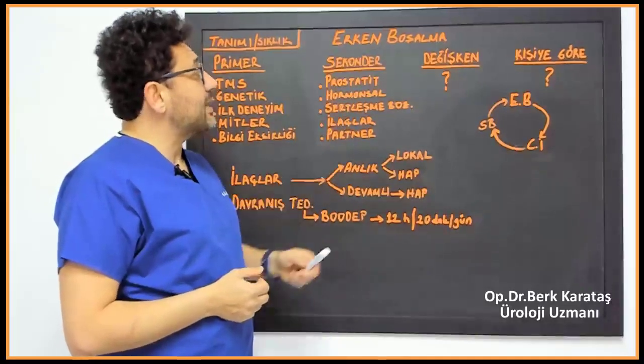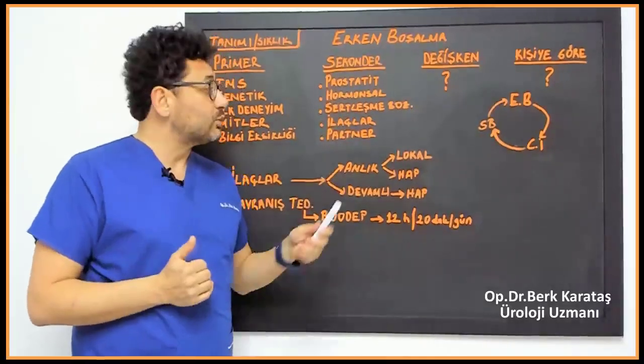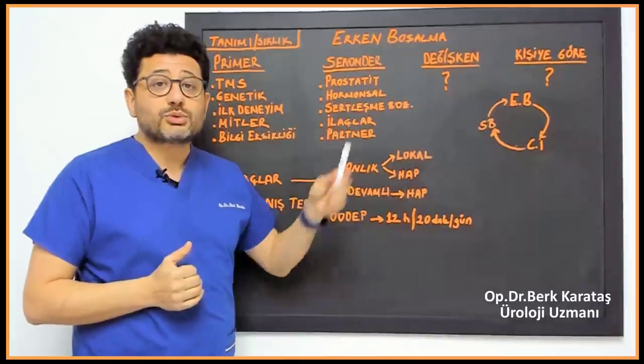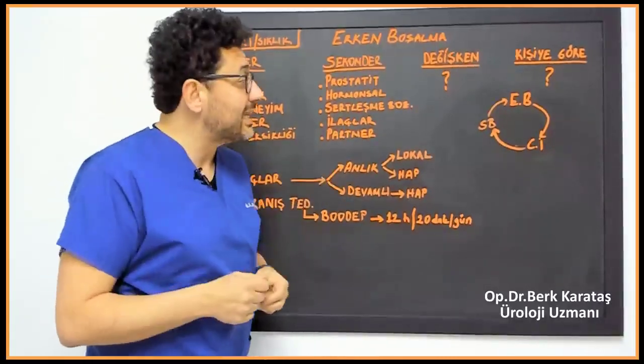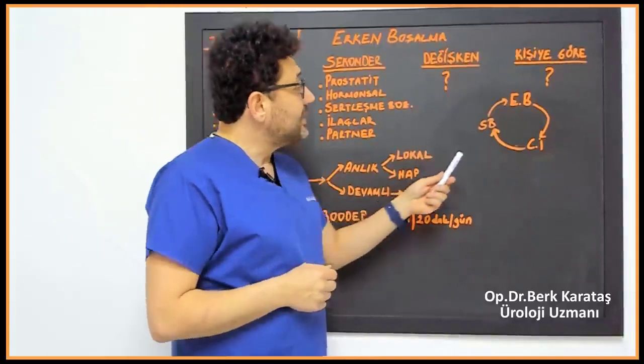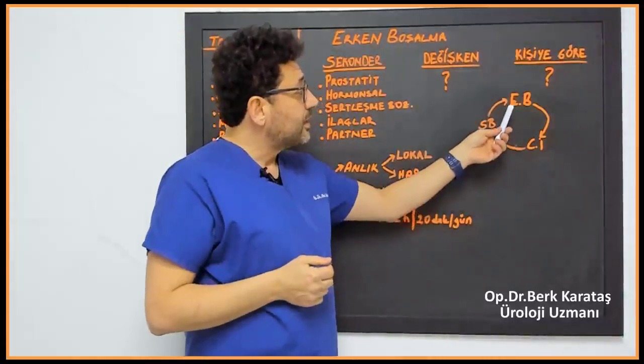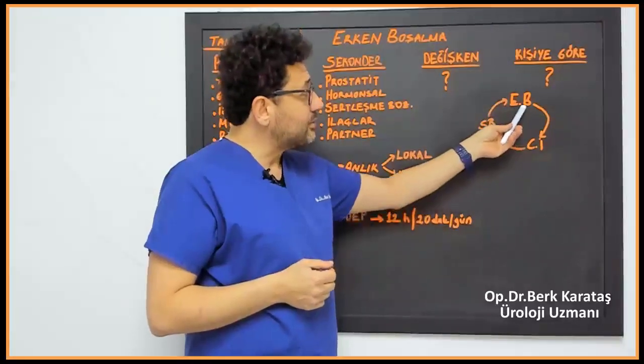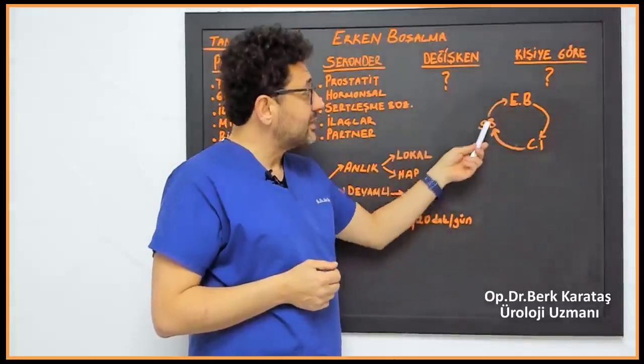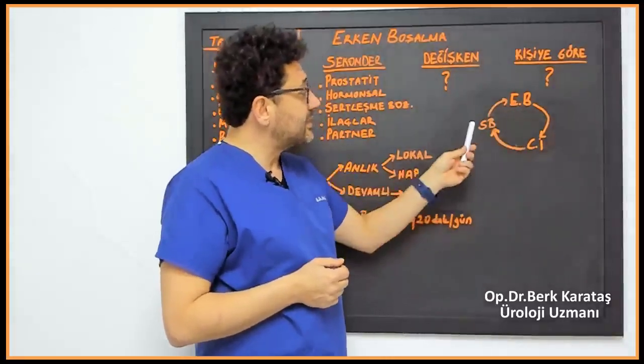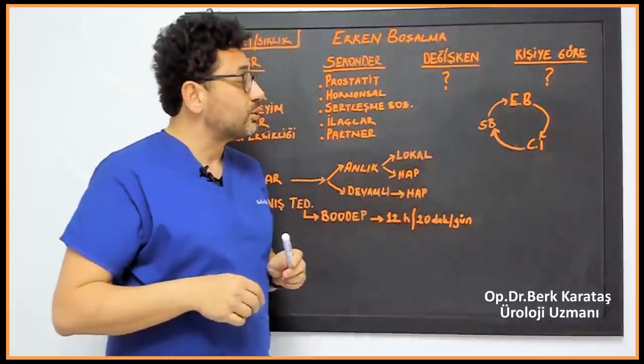And in fact, the most important is erectile dysfunction. In premature ejaculation that starts later, it is necessary to ask about erectile dysfunction. I've explained this cycle in one of my videos before. Erectile dysfunction, premature ejaculation, sexual reluctance and erectile dysfunction complement each other wherever they start, in the form of a wheel.